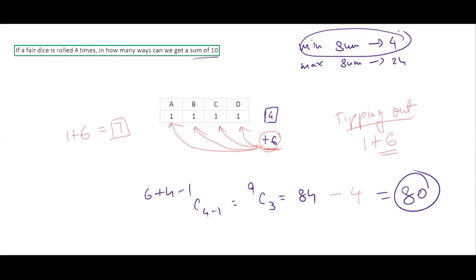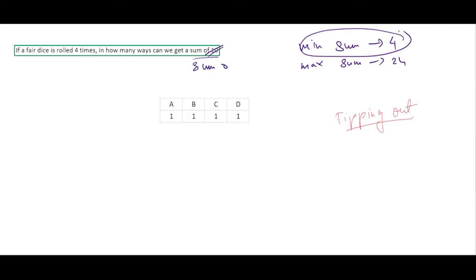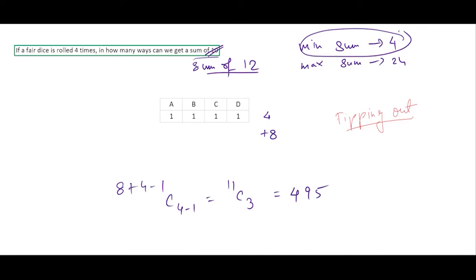Now let's try a sum of 12 with four dice. 12 is still closer to the minimum (4) than the maximum (24). Starting with 1 in each die (sum = 4), we need to distribute 8 more. Without restrictions: (8 + 4 − 1) C (4 − 1) = 11C3 = 165 cases. The tipping point remains the same: any die getting 6 or more of the additional 8 is a problem.